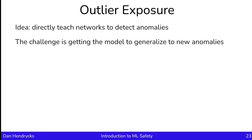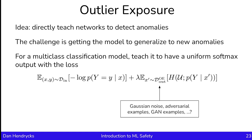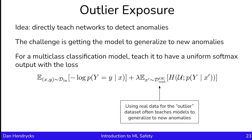For the case of multi-class classification, outlier exposure teaches the model to have a uniform softmax output using a combined loss: the typical classification loss plus an outlier exposure loss. In the outlier exposure loss, we try to have the softmax distribution match the uniform distribution through a cross-entropy loss, where the outlier examples are sampled from some set D_out. People have tried Gaussian noise, adversarial examples, or GAN examples for this set, but those don't teach the model to generalize to new anomalies very well. What works substantially better is using real data for the outlier dataset, as this often teaches the model to generalize to new anomalies.